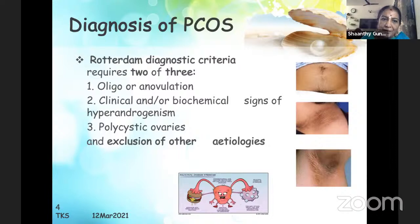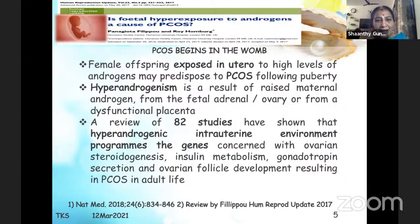Although we have many diagnostic criteria, the Rotterdam diagnostic criteria is used, where three points are noted: one, oligoovulation or anovulation; two, clinical and/or biochemical signs of hyperandrogenism; three, polycystic ovary. Any two of the three, plus exclusion of other pathologies, establishes the diagnosis. When does PCOS begin? It seems to begin in the womb itself — female offspring exposed in utero to high levels of androgen may be predisposed to PCOS following puberty.